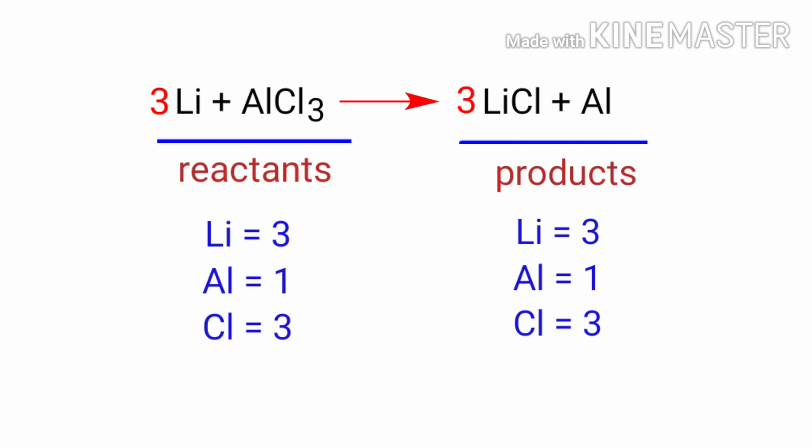The equation is now balanced. There are three lithium atoms, one aluminum atom, and three chlorine atoms on both sides.